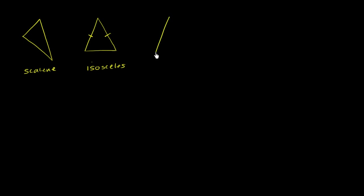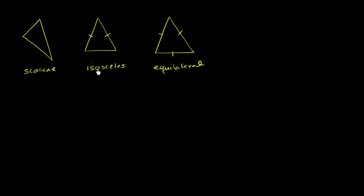And then if all three sides are congruent, if all three sides are the same length, we would call this equilateral. In most circles, you could also say this is isosceles because isosceles means at least two sides being equal, so an equilateral triangle has all three equal. So you could say equilateral and isosceles, while a triangle with only two equal sides would just be isosceles, not equilateral.